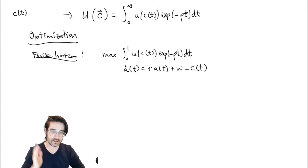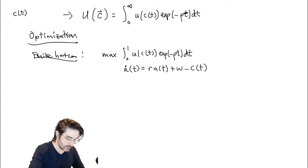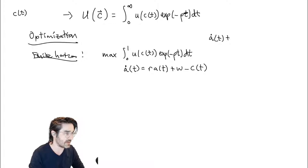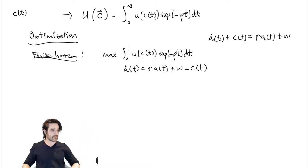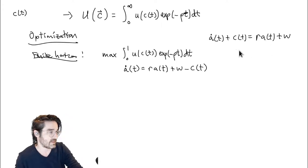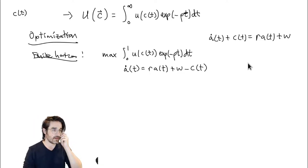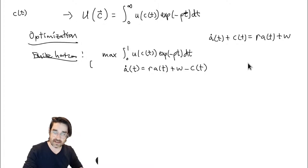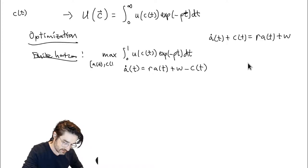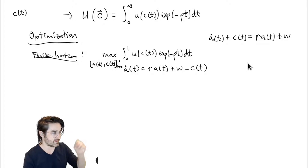Another way to write this: A-dot plus consumption equals income, which is capital income plus wage. A is the state variable, C is the choice variable — you choose C and A evolves to satisfy the constraint. We require A(t) >= 0 (can't borrow) with A(0) = A_0 > 0. You start with some assets and you can consume them, pile them up, whatever you want.